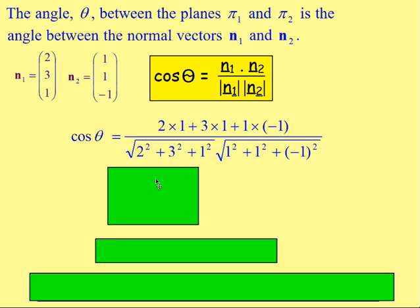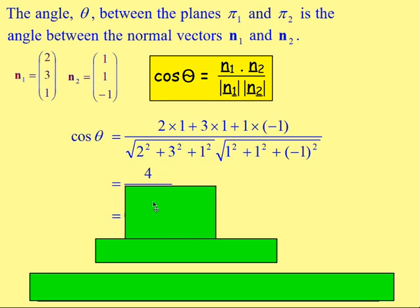Simplify that. If you work out the top, you would end up getting 4. If you work this, it would be the magnitude of 14. The other one would be 3. Giving you an answer then, if you stick that into the calculator, 4 over root 14 times root 3, you get 0.617 and so on.